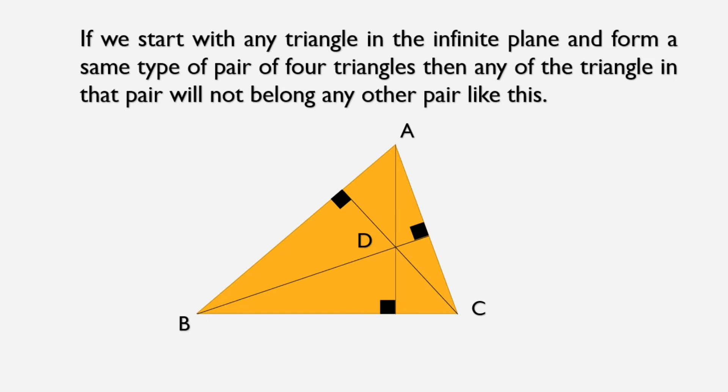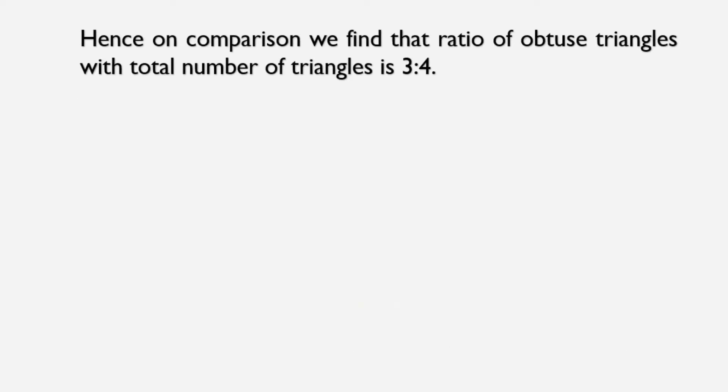It is the only pair and in any other pair there will be no triangles from this one. Also exactly 3 of these triangles are obtuse, and in any pair only 3 of them will be obtuse. So on comparison we find that the ratio of obtuse triangles with the total number of triangles is 3 ratio 4. So the required probability is 75%.